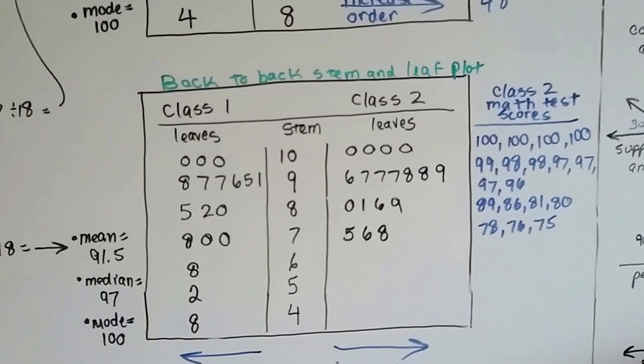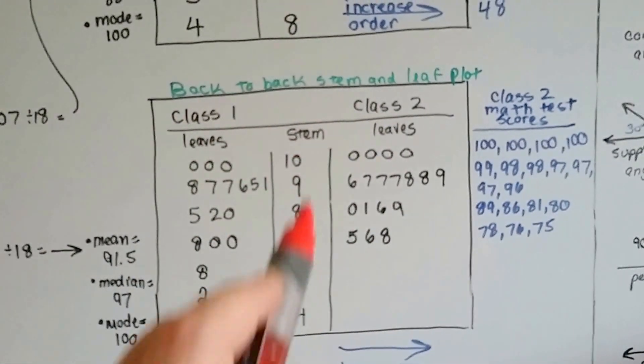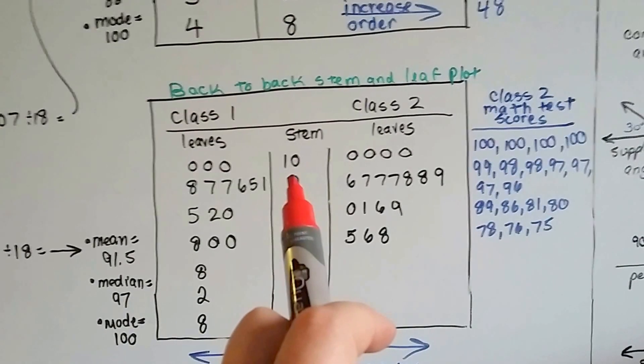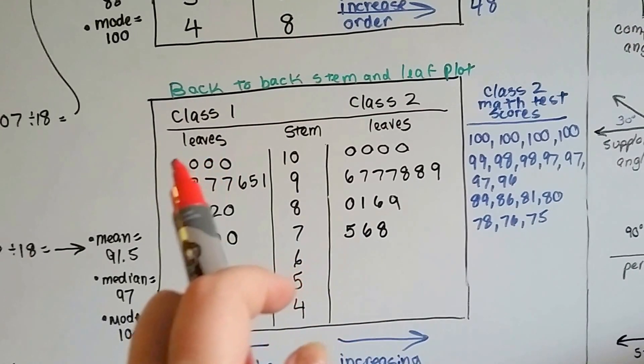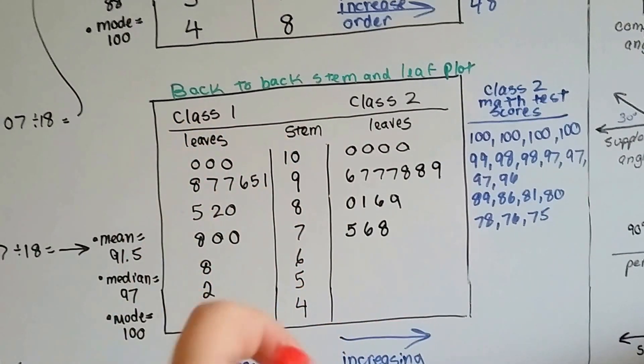Now for a back-to-back one, it compares class one with class two, and here's the stems down the center, and the leaves move away from the stem in ascending order, going away from the stem.